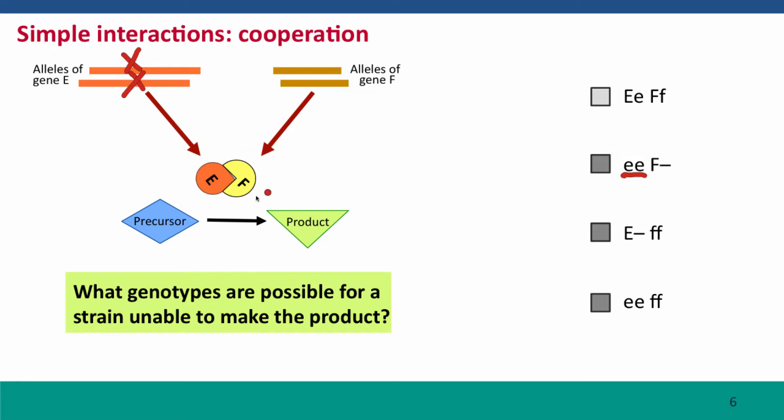You would not make the functional protein dimer that carries out the reaction and the reaction wouldn't happen. Or you could be defective for both alleles of gene F, because if you're not making subunit F, the reaction isn't going to happen. There'll be no product.